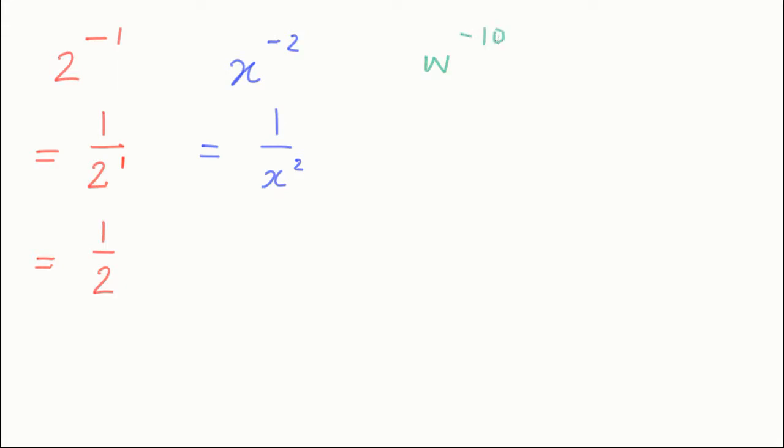And another example: if I have w to the minus 10, then that would be 1 over w to the power 10. So that's all there is to that part.